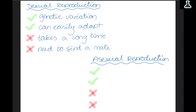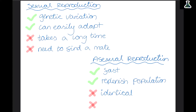Asexual reproduction is good because it is very fast, which means it is easy to replenish the population. However, it produces genetically identical organisms, which then means they can be more susceptible to disease. If they are all identical and one of them is susceptible to a certain disease, then they all are. If the population gets infected, all of them could die.